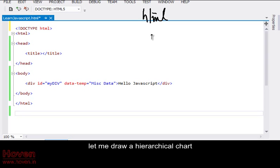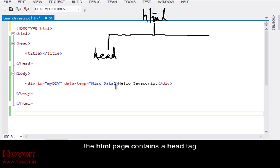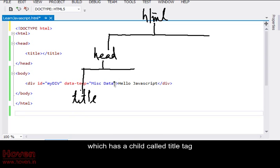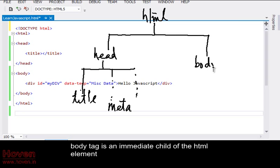Let me draw a hierarchical chart. The HTML page contains a head tag, which has a child called title tag. More could be there, like meta tags.